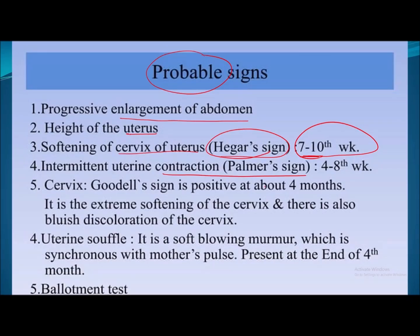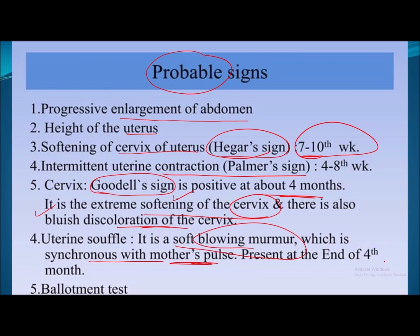Another sign is the Goodell sign, positive at about 4 months, characterized by extreme softening of the cervix and bluish discoloration of the cervix similar to the vagina. Sometimes a soft blowing murmur synchronous with the mother's pulse can be heard at the end of the fourth month — this is known as uterine souffle.